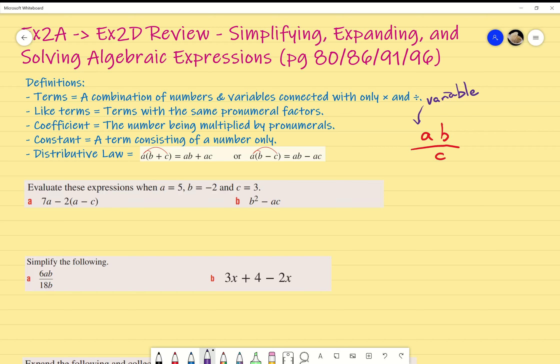Coefficient is just the number in front of a pronumeral. For example, 4A, the coefficient is 4. Constant is just a term consisting only of a number. This one's super important because we'll be using it later when we do linear graphing.